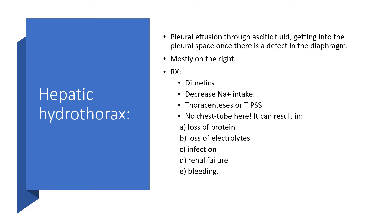Hepatic hydrothorax. Pleural effusion will occur through the ascitic fluid getting into the pleural space, once there is a defect in the diaphragm. This will occur mostly on the right, because the liver is on the right. How do we treat this? We can use diuretics, advise the patient to take less sodium, and ascendocentesis or transjugular intrahepatic portosystemic shunt could be embarked upon. Please, no chest tube in hepatic hydrothorax — it can result in loss of protein, loss of electrolytes, infection, renal failure, and possibly bleeding.